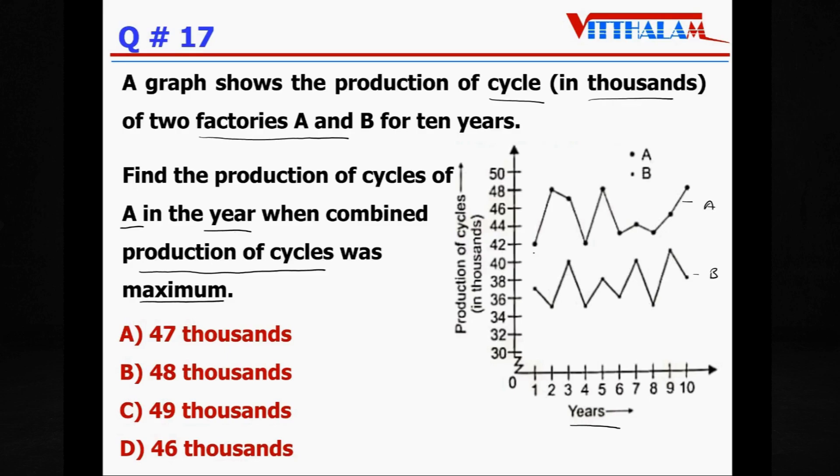That means we have to first find out the summation of both the company's total productions. So in the first year it is 42,000 and 37, so 42 plus 37 that is 79. Let's say this is the highest so far. Second year, production A that is 48 and this is somewhere around 35, so 48 plus 35 equals 83. Now this is the highest, forget about this.